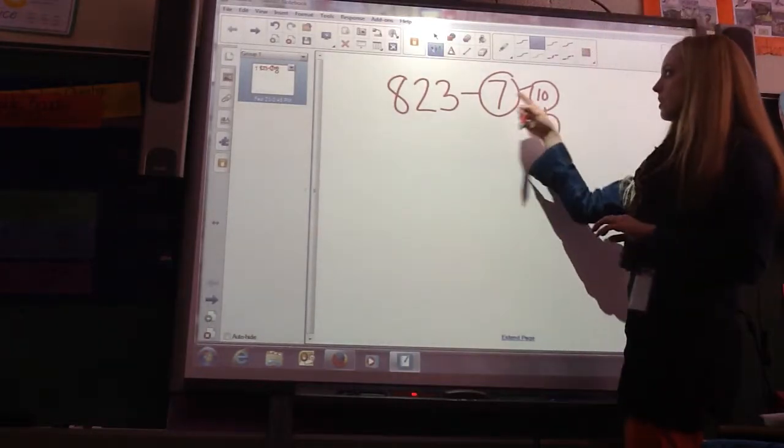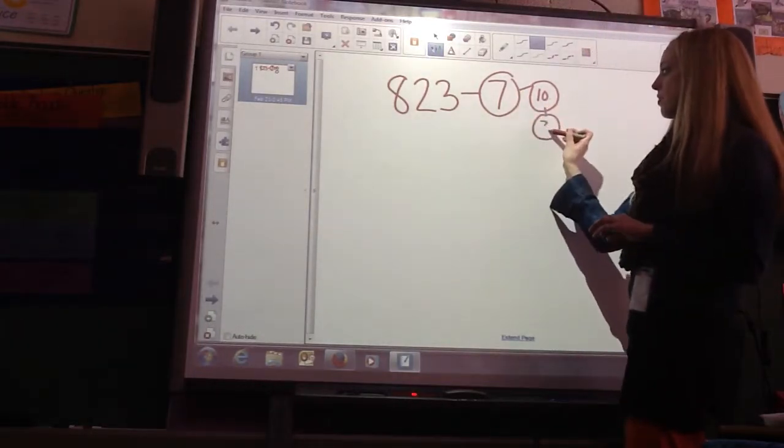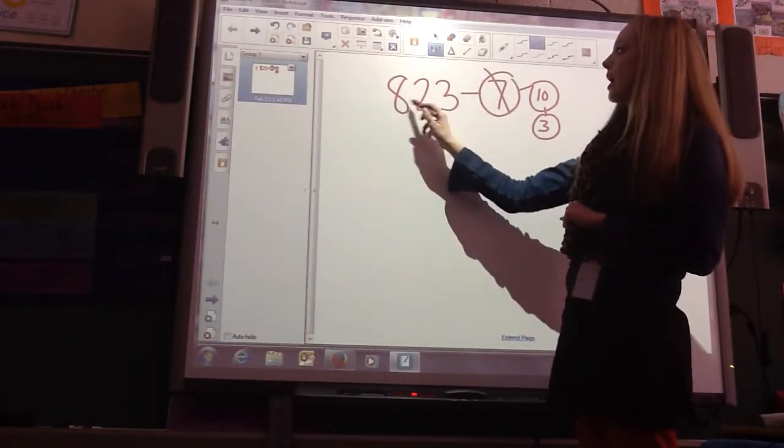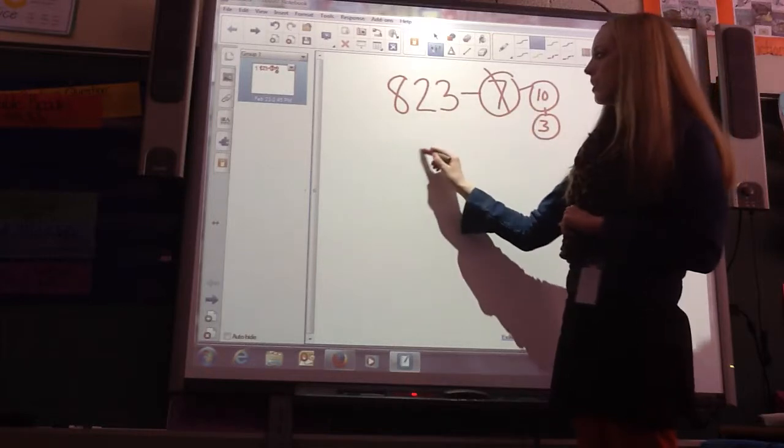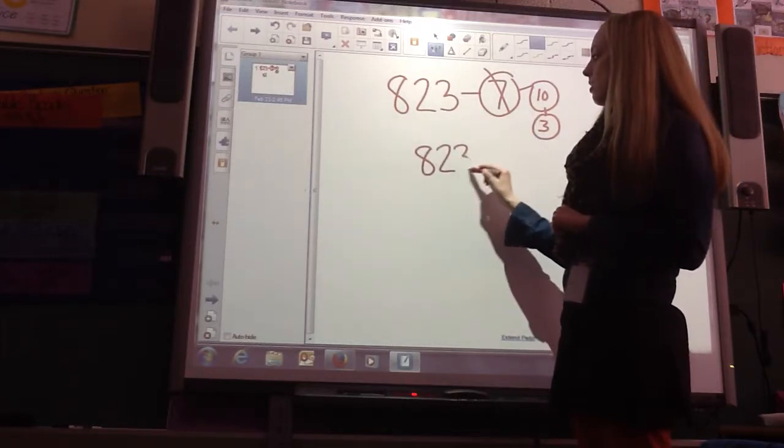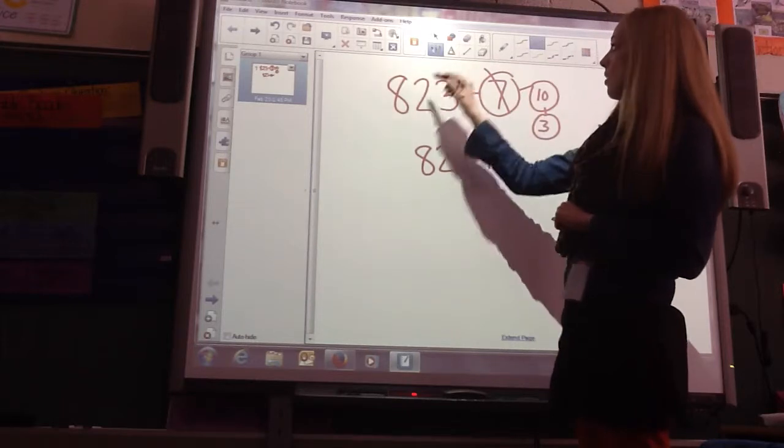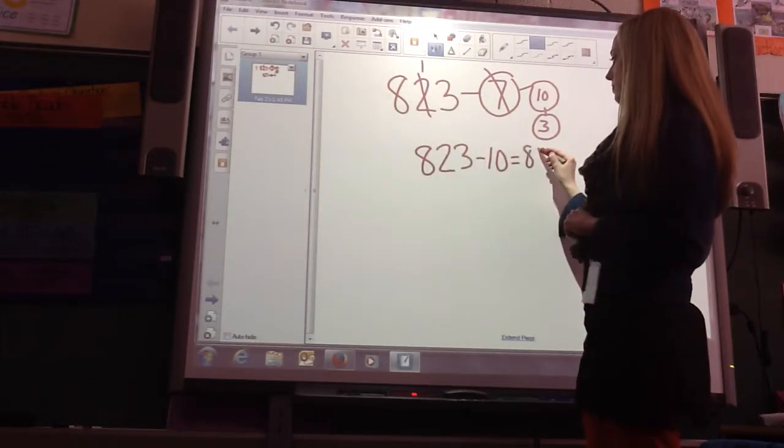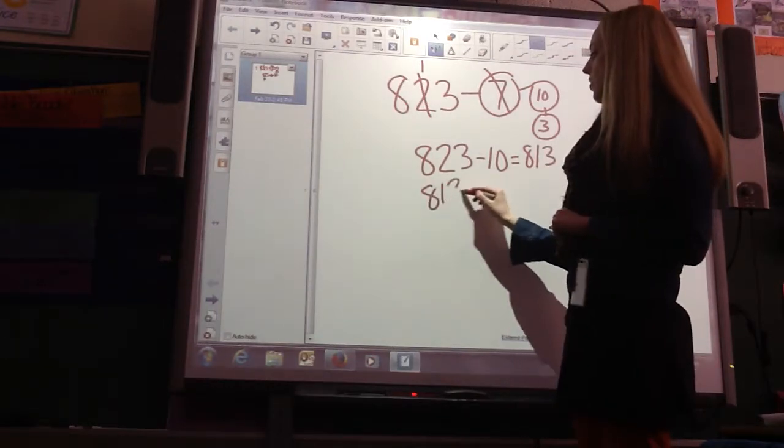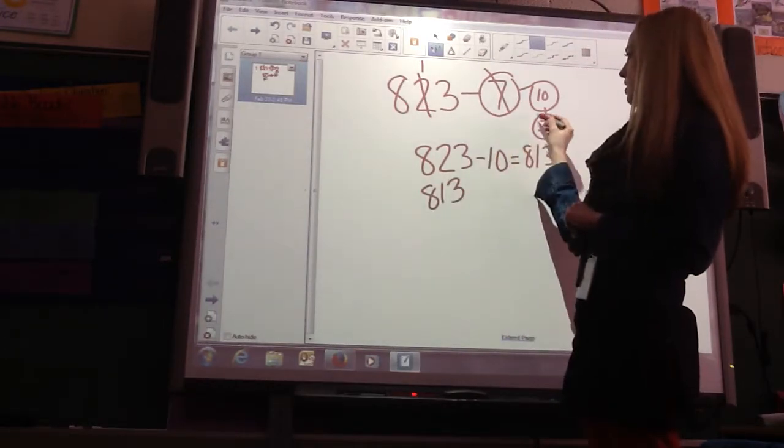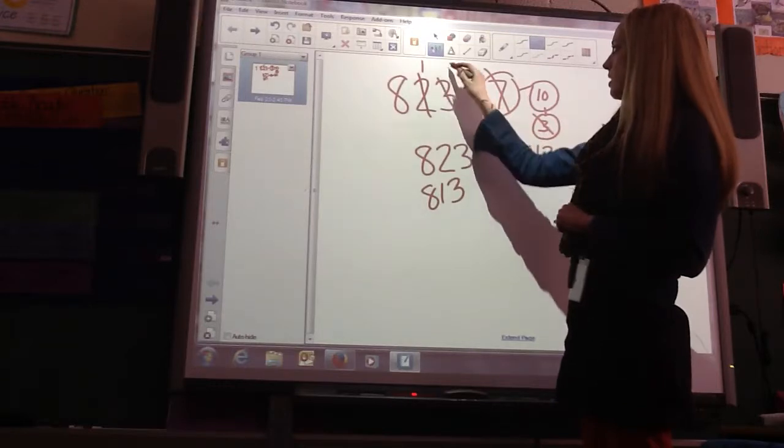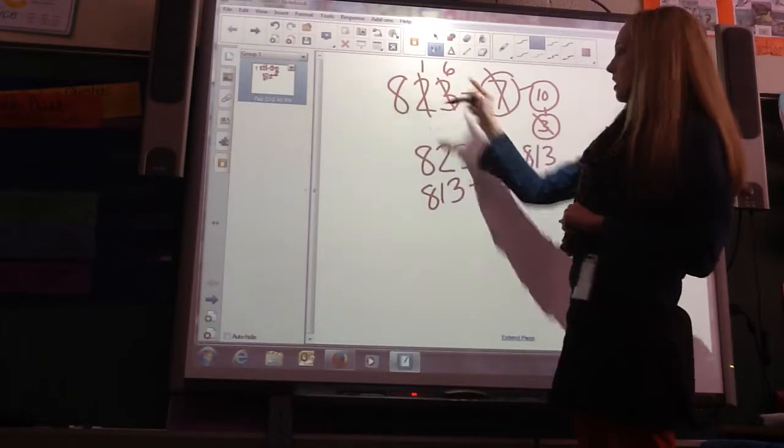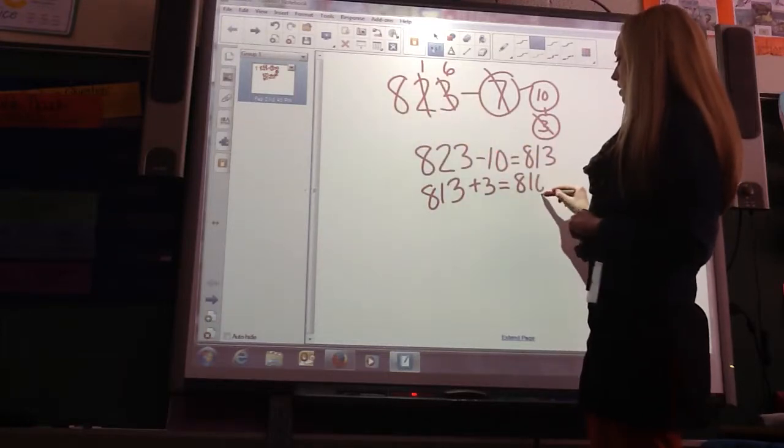And, what's the other part? 7 and what make 10? 3. So, we're supposed to do 823 minus 7. Now, we're going to do 823 minus 10. And, I'm going to write this out the other way. Minus 10. Minus 10. 813. 813. We're going to add the extra ones. 3 plus 3 is 6. Plus the extra ones. Comes out to 816.